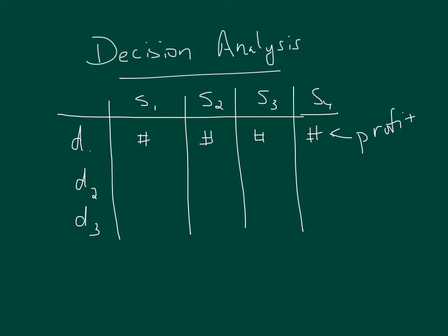So we have different criteria we are going to talk about. We are going to talk about the maximax, which is more of an optimistic approach; the maximin, which is more of a pessimistic or conservative approach; and a third criterion that is somewhere in between. Once we have this, we could also move to the world of risk after looking at those.